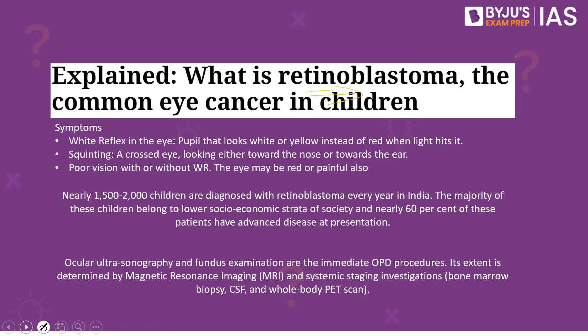Looking at the symptoms: there will be white reflex in the eye, a pupil that looks white or yellow instead of red when light hits it, squinting or crossed eye looking either towards the nose or towards the ear, poor vision with or without white reflex, and the eye may be red or painful. Nearly 1500 to 2000 children are diagnosed with retinoblastoma every year in India. The majority belong to lower socioeconomic status, and nearly 60% of these patients have advanced disease at presentation, associated with high cost of treatment, poor access to care, lack of awareness, and social stigma.